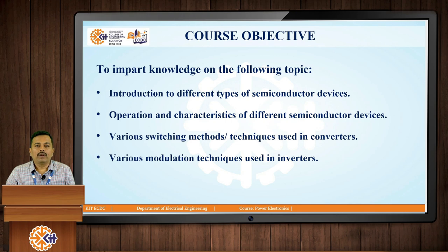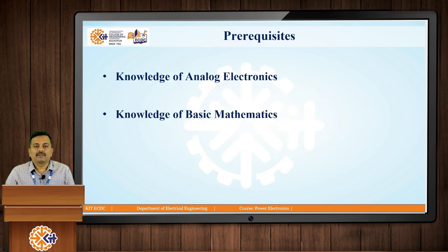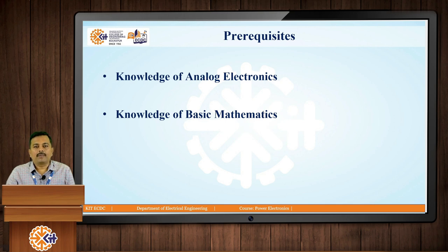Basically, we are going to study about rectifiers — controlled rectifiers and uncontrolled rectifiers — then cycloconverters, choppers, and inverters. We will see what these different devices are in the next few minutes. The prerequisites for this course are that students should have a basic knowledge of analog electronics and basic knowledge of mathematics.